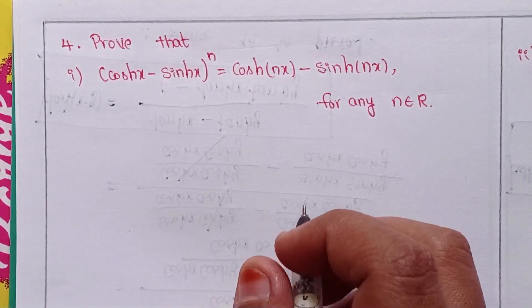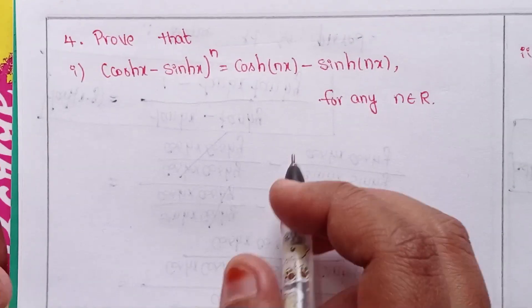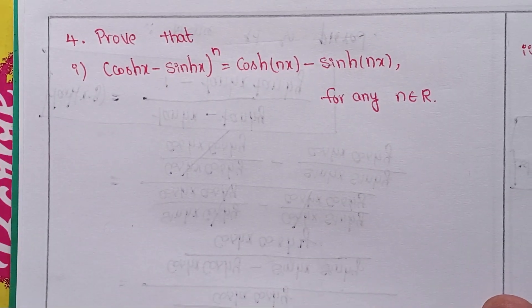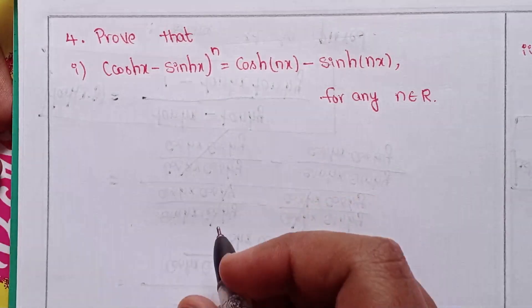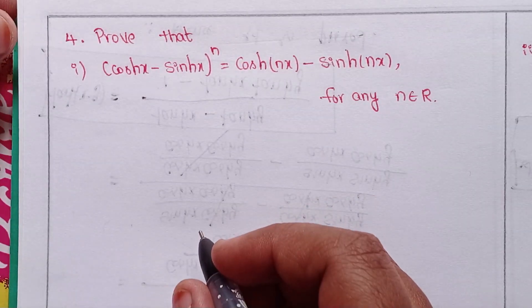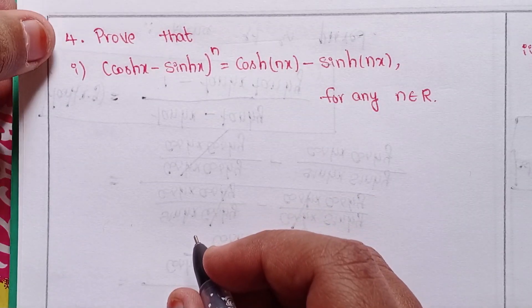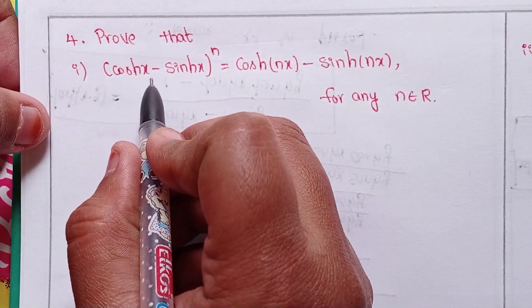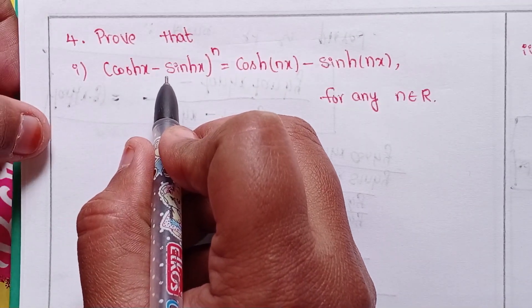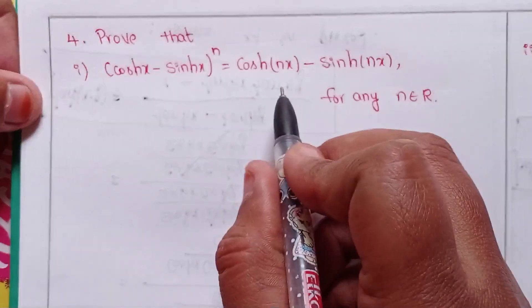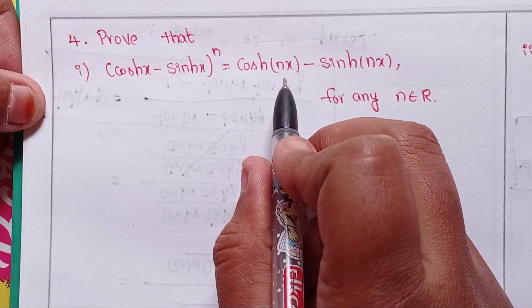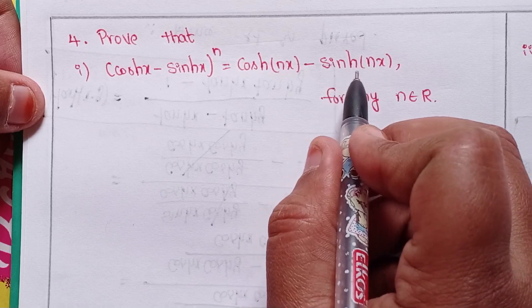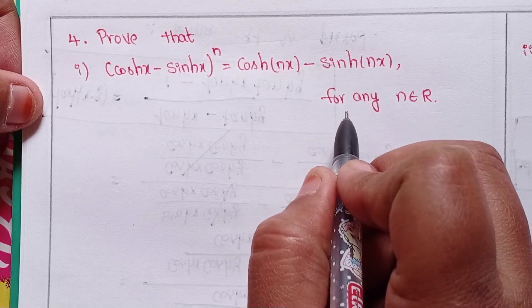Hi viewers, this is Shahin and welcome to my channel. Today we will discuss intermediate first year 1A chapter number 9, hyperbolic functions, exercise 9A, fourth problem. Prove that: first one is (cosh(x) - sinh(x)) to the power of n equals cosh(nx) minus sinh(nx) for any n belonging to R.